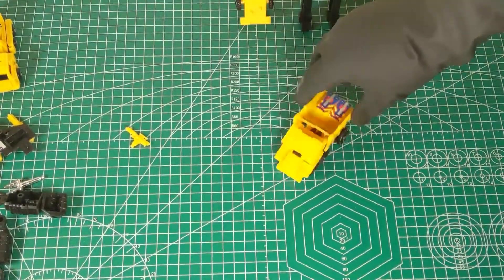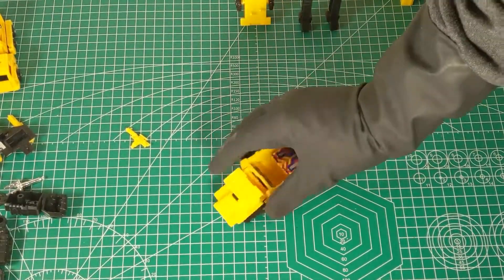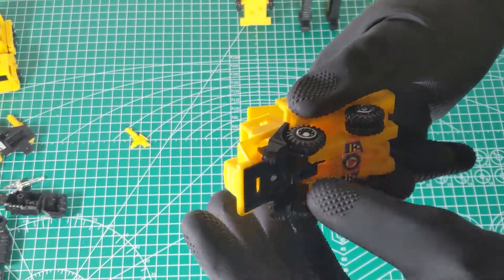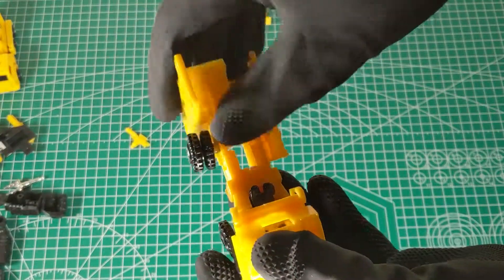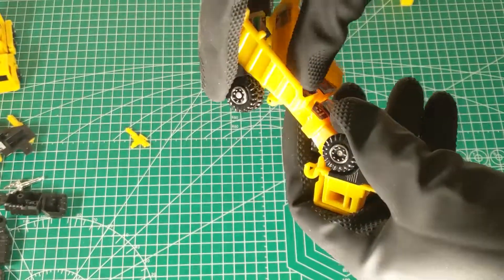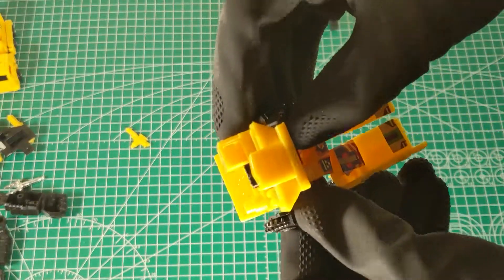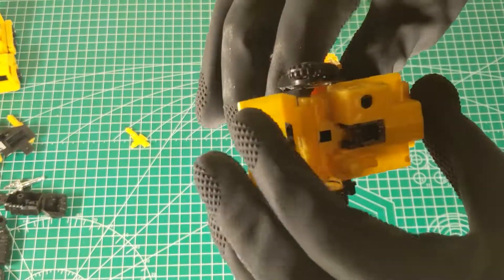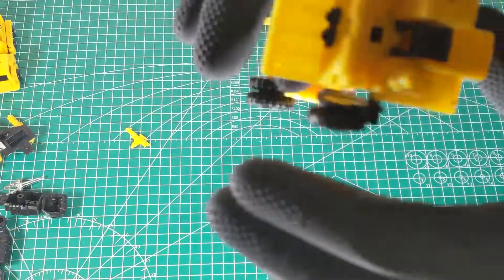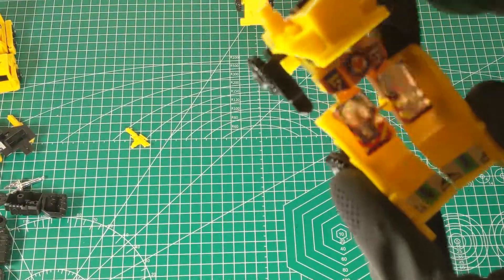And here we have Long Haul, which doesn't seem to want to stay together there. He just wants to flap down. Just doesn't stay in truck mode there. He does have separate feet though, so he's got that going for him. Does not have hands. You know, all these guys, they just have a single piece for the arms. So there's no real hands there.